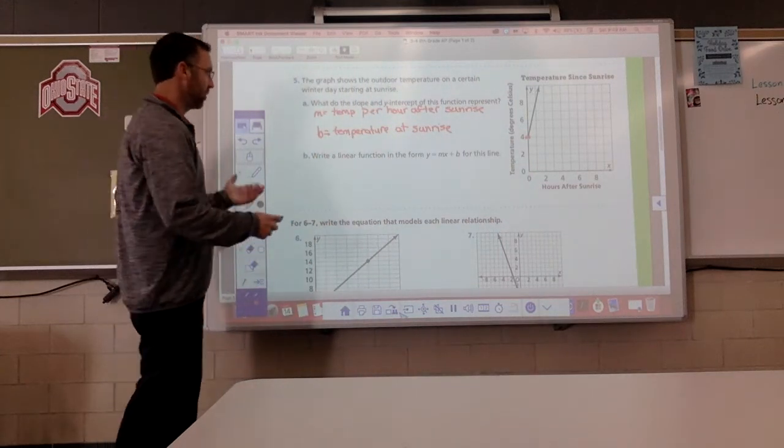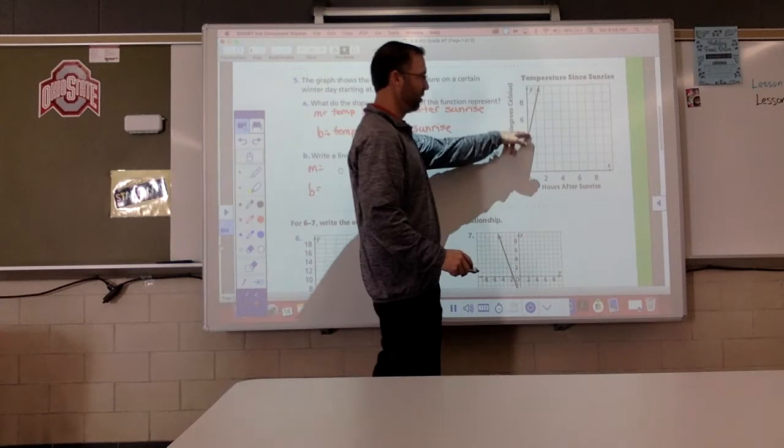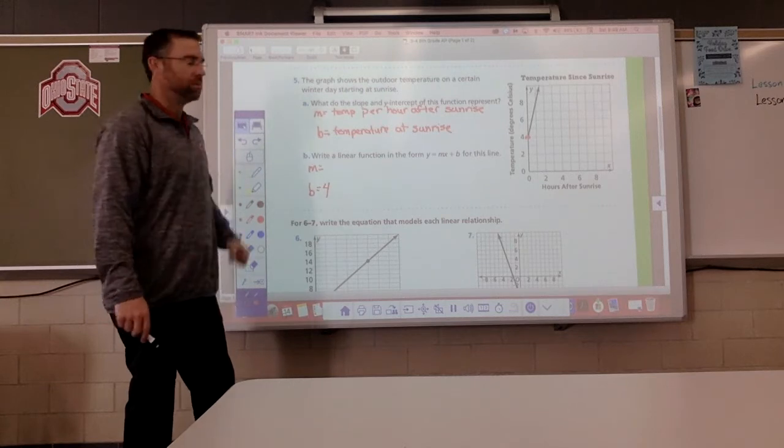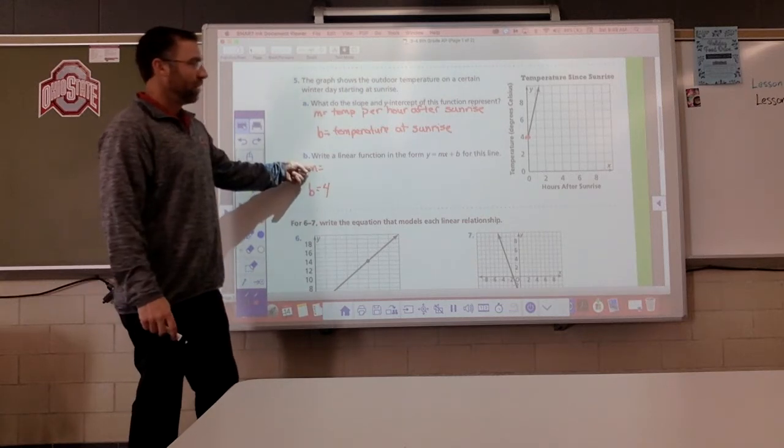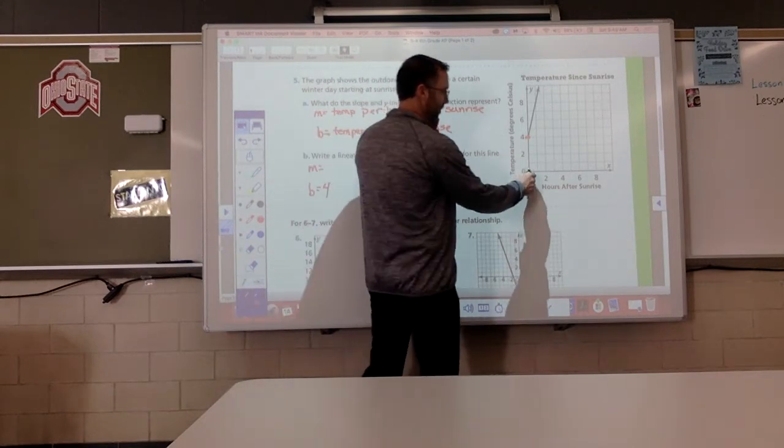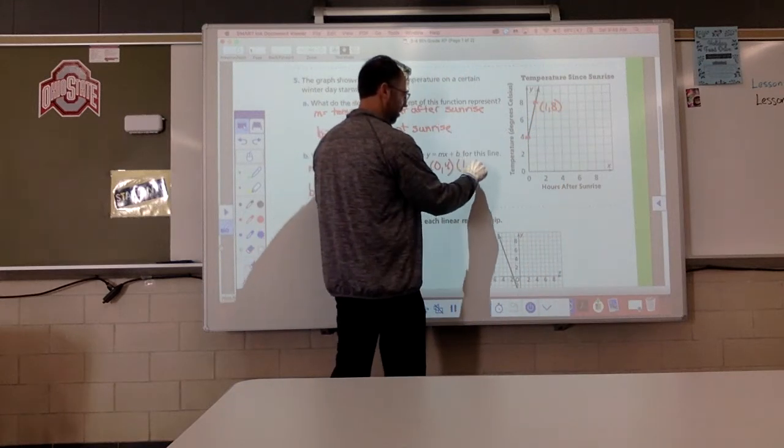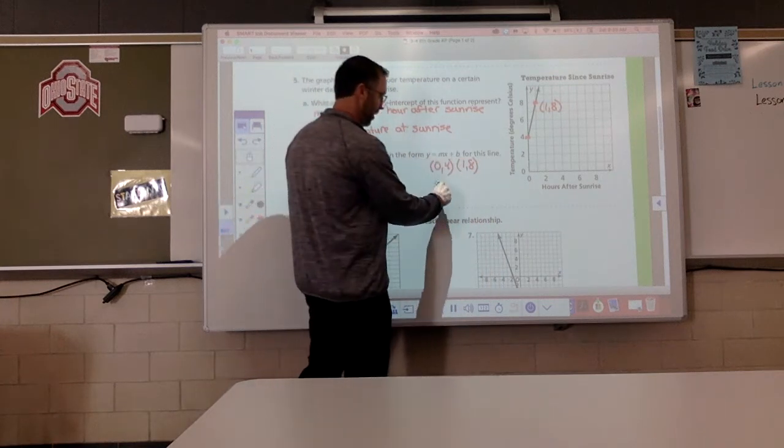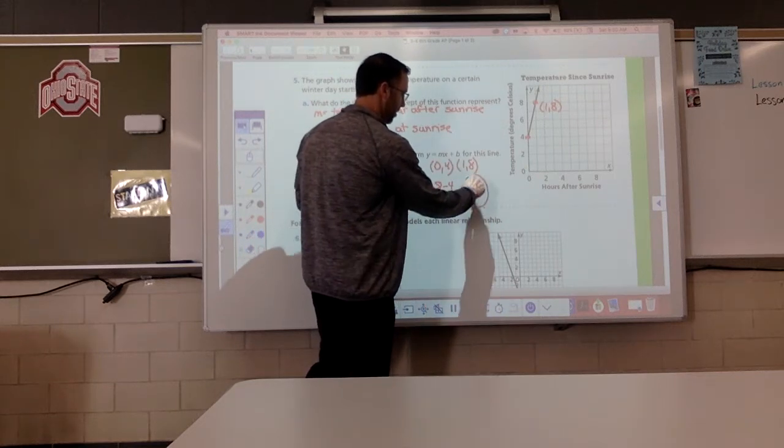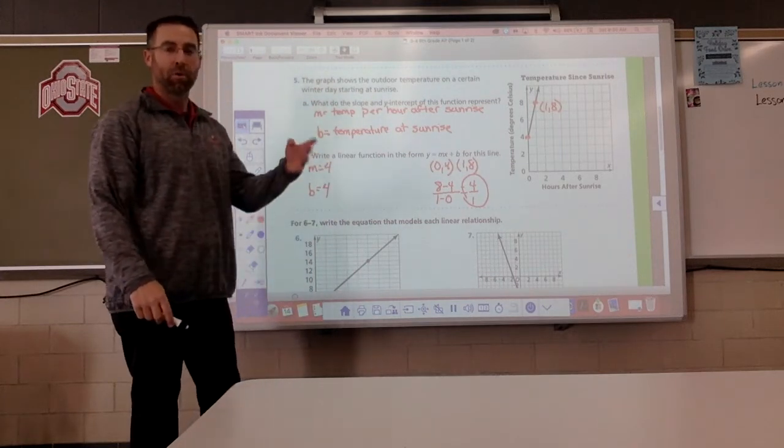Write a linear function. Okay, well, I've got to know my slope and my y-intercept. Well, my y-intercept, let's start with that one. That one's easy. We already said it. It's 4. Starts right there. Okay, now we've got to find a slope. Well, we know 0, 4. I need a second-ordered pair. Over 1. That looks like a good one. Over 1, up 8. Big y value minus small y value. 8 minus 4. 1 minus 0. I like easy numbers. 4 over 1. What does that mean? It is gaining 4 degrees per hour.